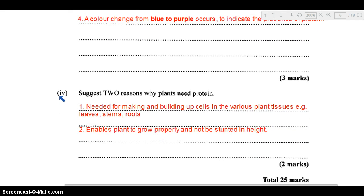Part four: suggest two reasons why plants need protein. Generally protein is needed for growth and repair. The plants need the proteins for making and building up the cells in the various plant tissues. It needs the cells to form the leaves, the stems, the roots, and it enables the plant to grow properly and not be stunted in height. A plant lacking in protein can be very stunted, shorter than normal. Protein is needed for growth and repair to ensure that the plant is growing properly.